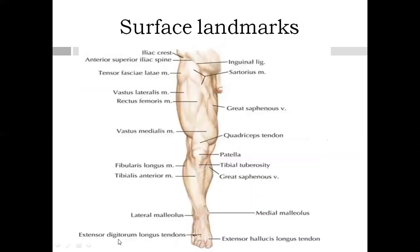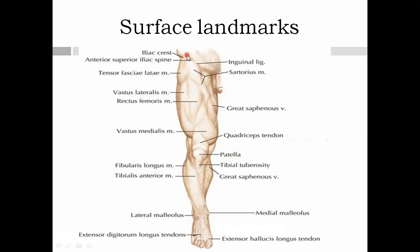First we have the surface landmarks. The important surface landmark of the thigh is the anterior superior iliac spine and the pubic tubercle. Both these are connected by the inguinal ligament — the inguinal ligament's attachment is from the anterior superior iliac spine to the pubic tubercle. Lateral to this pubic tubercle, we have a point called the pubic symphysis.